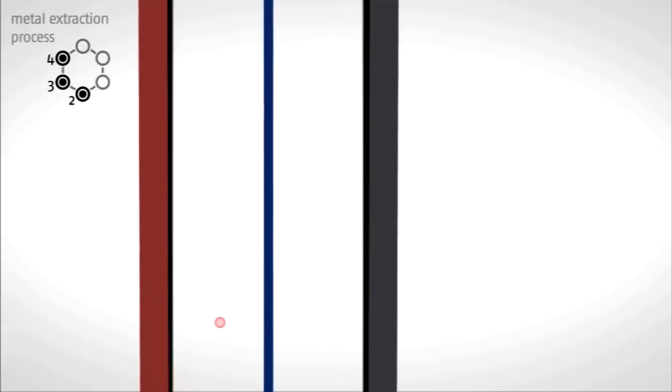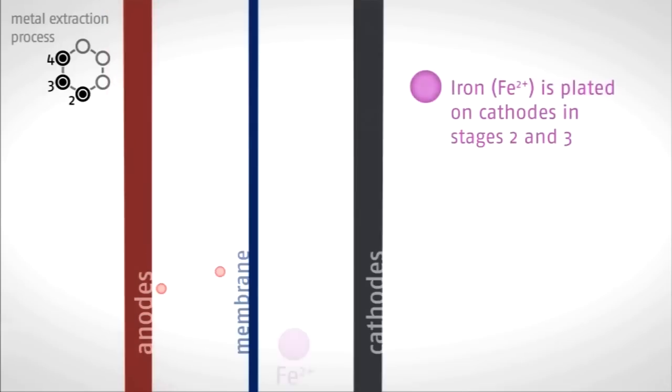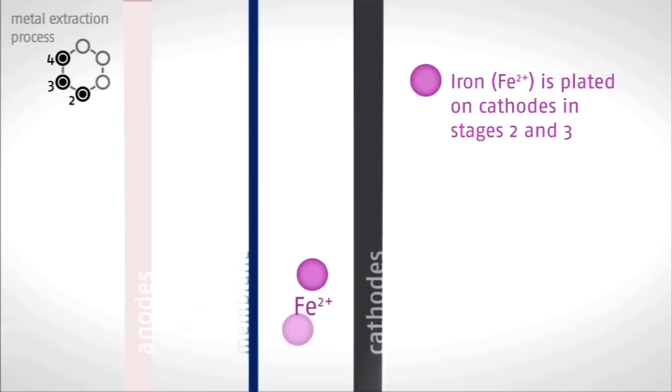Iron is plated on the cathodes during stages 2 and 3. As this occurs, sulfate anions are again attracted to the anodes.